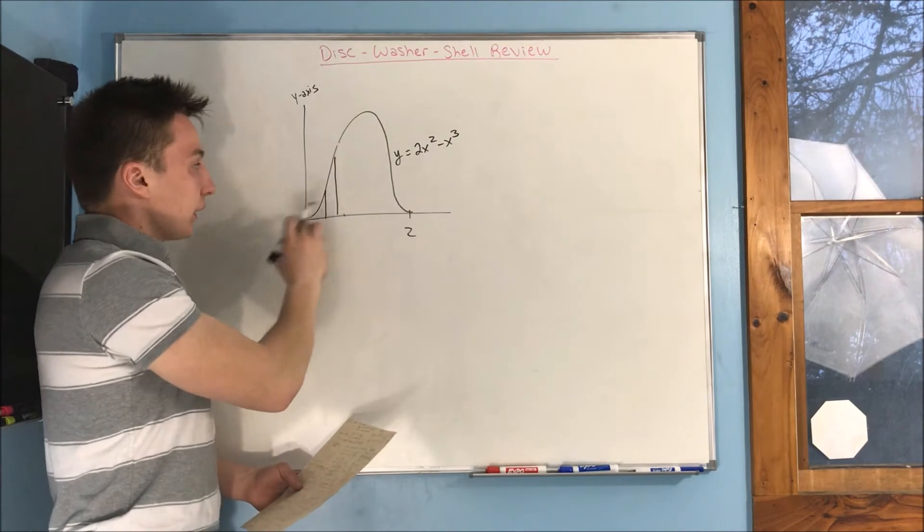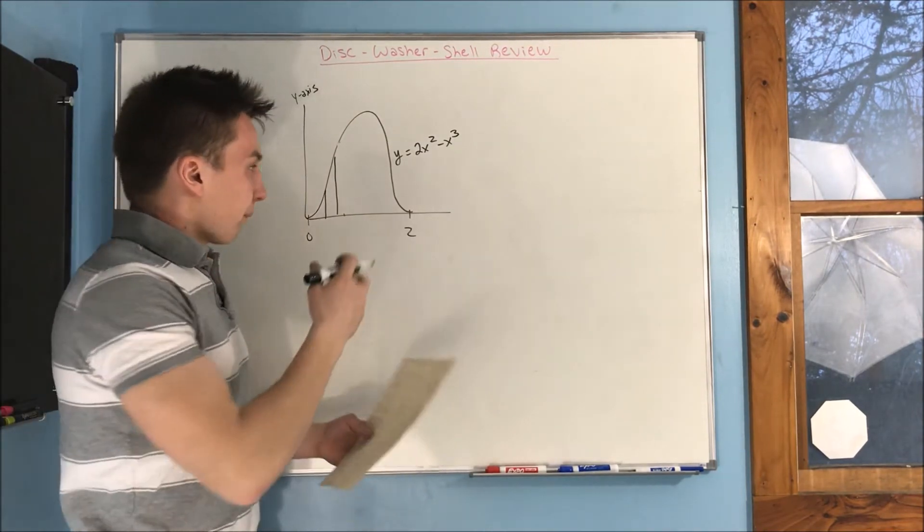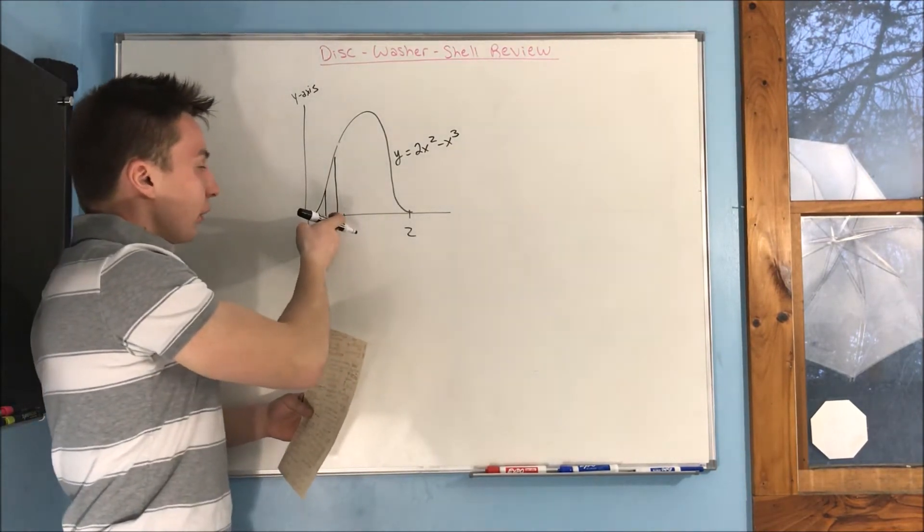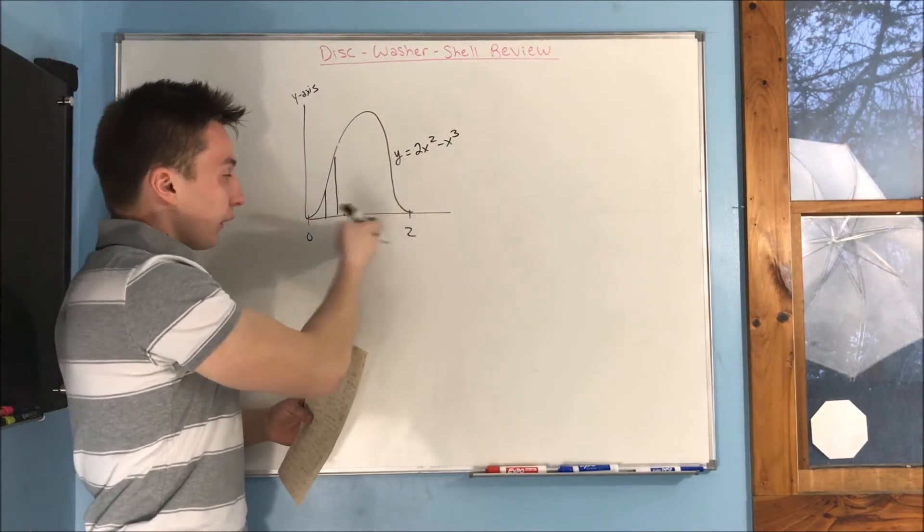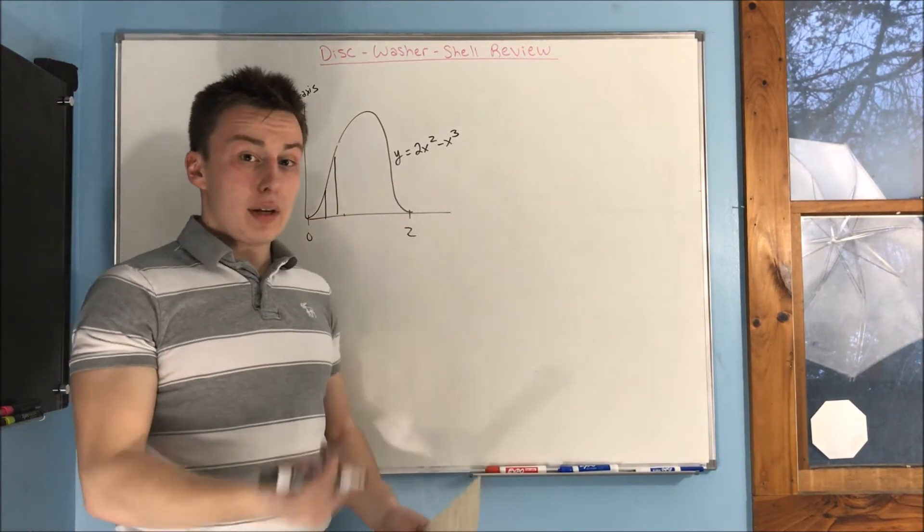Then you're kind of going to get a little cylinder here. And basically what you're going to do is you're going to get a bunch of those little cylinders along this region, and you're going to add them up in an integral.